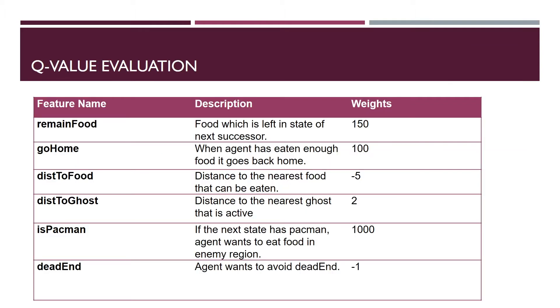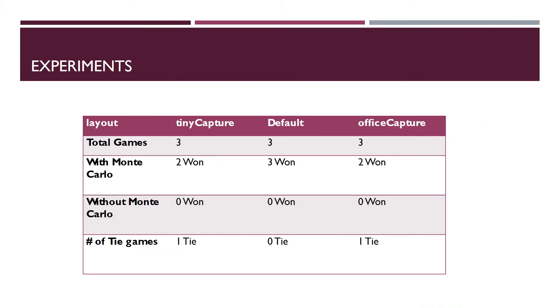These are the features we defined to get the Q-value evaluation, and these are some of the weights we assign to those features. The weights are decided manually.